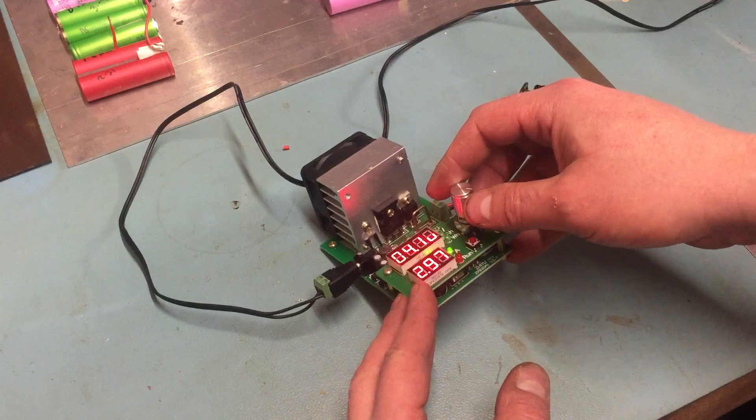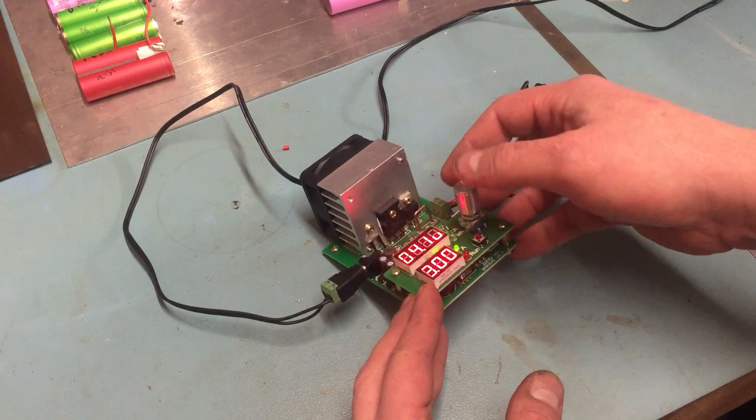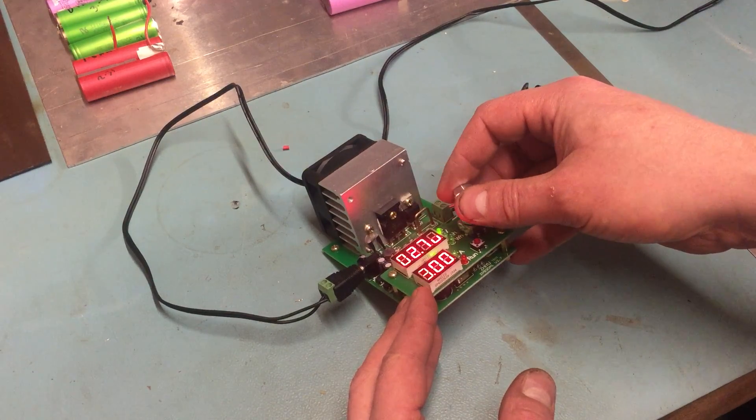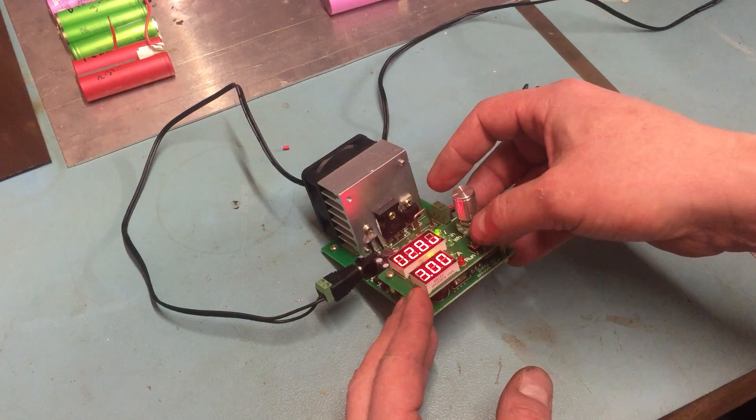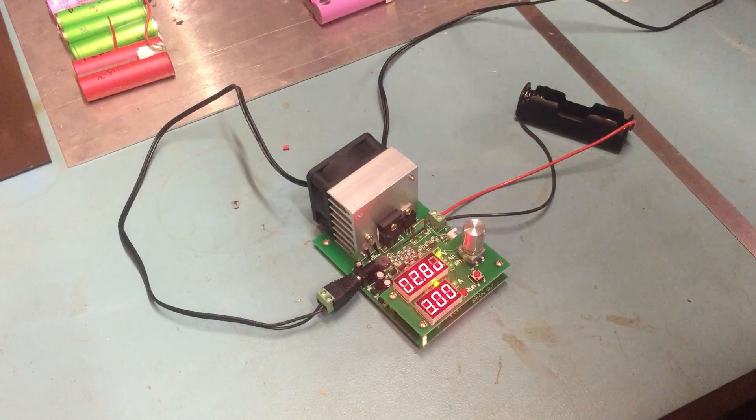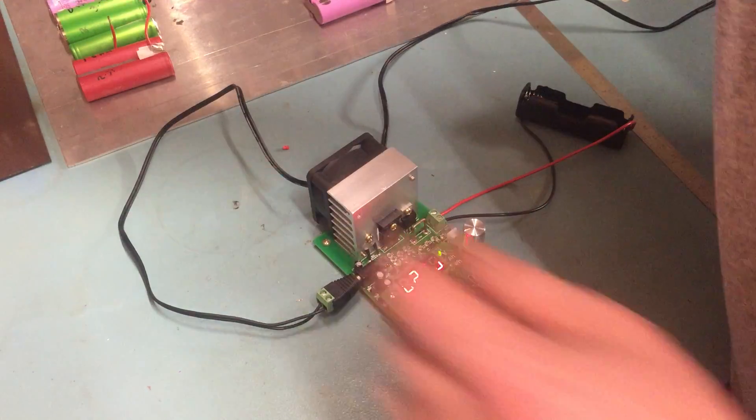So for a single 18650 I've been using it pulling them down at three amps. Again as I said I discharge to 2.8 volts. So if we just get an 18650 battery, let's try and find a single one.